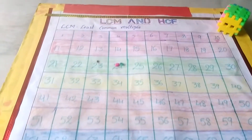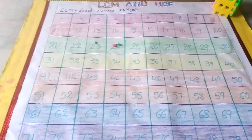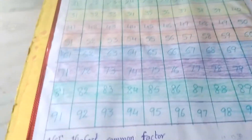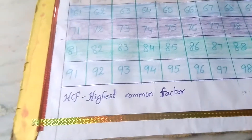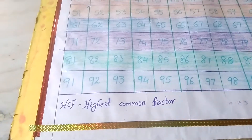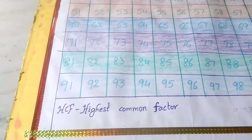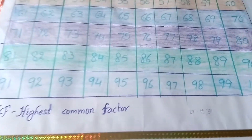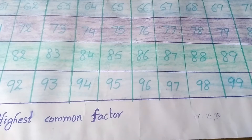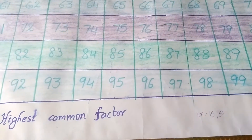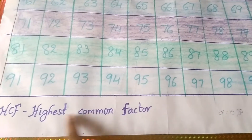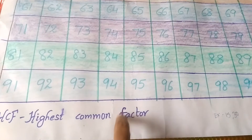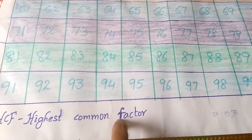Now let us go through HCF. HCF is nothing but Highest Common Factor. Let us go through the example: 15 and 30. Here you have to observe the highest common factor. First, what are the factors you have to find out?